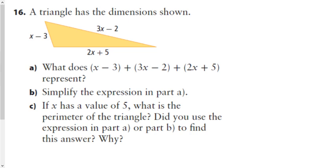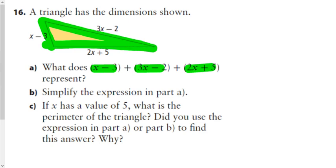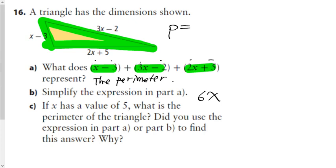Question 15 shows a triangle with given side length expressions. This plus this plus this represents the perimeter of the triangle. To simplify: x plus 3x plus 2x is 6x; negative 3, negative 2, and positive 5 make 0. So the perimeter of this triangle equals 6x.